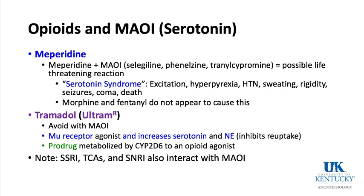Tramadol (Ultram) should also be avoided with MAOI inhibitors. Tramadol's mechanism of action includes not only mu-receptor agonism but also increased serotonin and norepinephrine reuptake inhibition — almost like an analgesic antidepressant combination. It is a prodrug that must be metabolized by the CYP2D6 system to be active. SSRIs, TCAs, and SNRIs can also interact with MAOI inhibitors, and combining serotonergic drugs can cause serotonin syndrome.